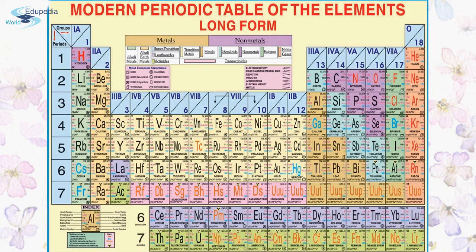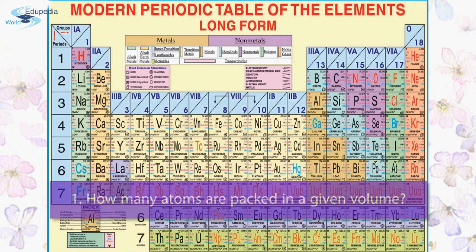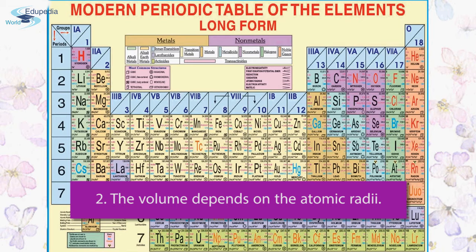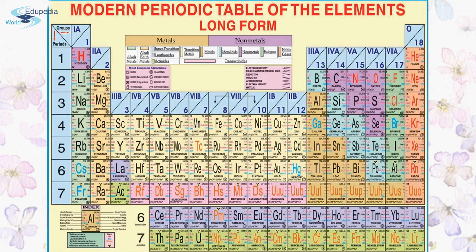In Group 1, density increases from lithium to sodium, then decreases at potassium, then starts increasing again going downward. This is because density depends on two factors: first, how many atoms are packed in a given volume; and second, the volume, which depends on the atomic radii. As you go down the group, atomic radii increase and so does the volume, meaning a given number of sodium atoms will weigh more than the same number of lithium atoms.